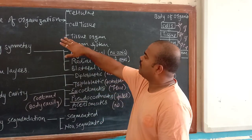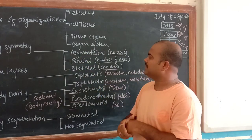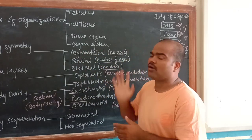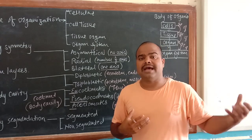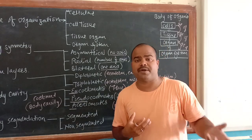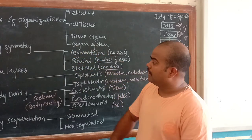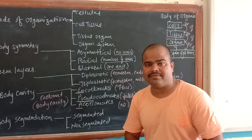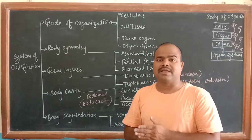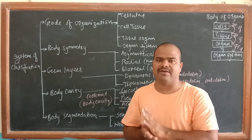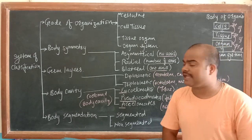The last and most important is organ system grade of organization. Like human beings, we have different organ systems, and each performs different functions. Next step is body symmetry. We already discussed what symmetry is - it's an imaginary axis of cutting where we can divide that organism into two equal halves. Based on body symmetry, organisms are categorized under three criteria.